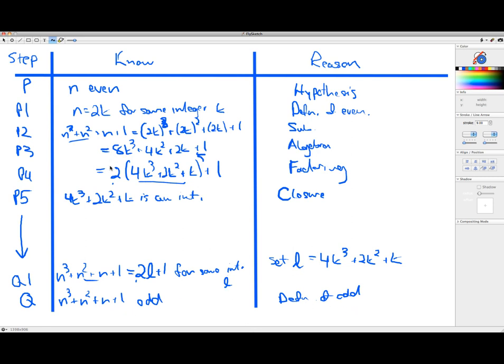So there we have a completed framework for a proof that starts with the hypothesis, uses logic, uses definitions, uses previously known results, like all this algebra stuff here, axioms of closure, and so forth to establish the conclusion must be true in that case.